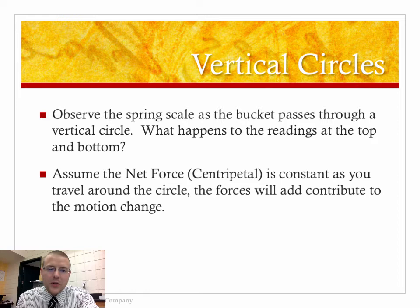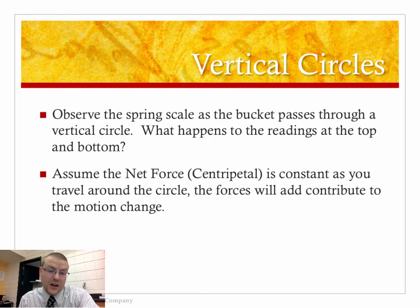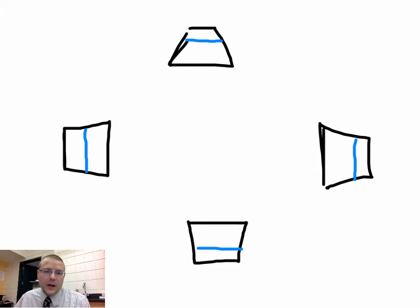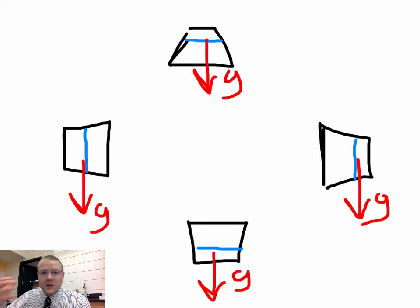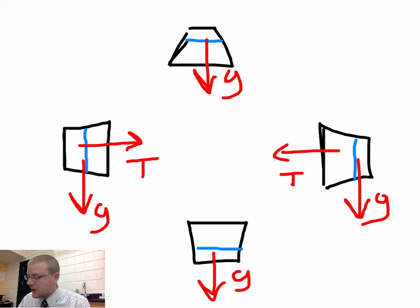When we have a vertical circle and send something up and over our head, the net centripetal force must be constant throughout. The centripetal force comes from contributions of all the forces at different points in the motion. Looking at the bucket at four different spots: gravity always acts downward, and there's tension. On the left and right sides, tension alone is the centripetal force. When the bucket is at any side position, I was pulling inward.